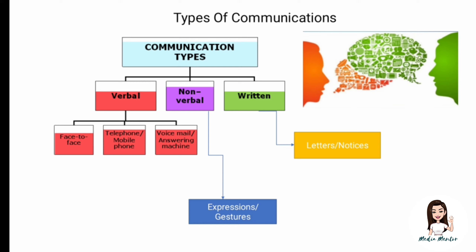Next are the types of communication. There are three major types: verbal, non-verbal, and written. In verbal communication, you have face-to-face communication — like conversations with friends — telephone or mobile phone calls, and recorded styles like voicemails and answering machines, which are examples we encounter in day-to-day life.